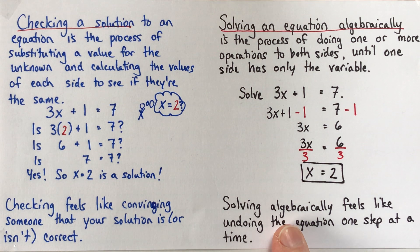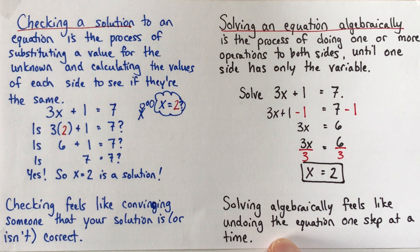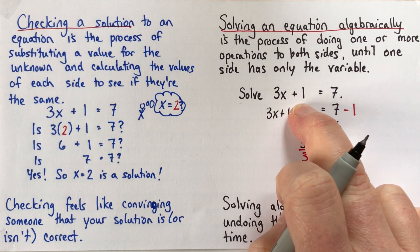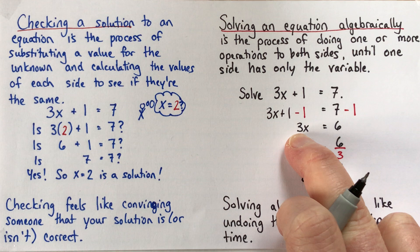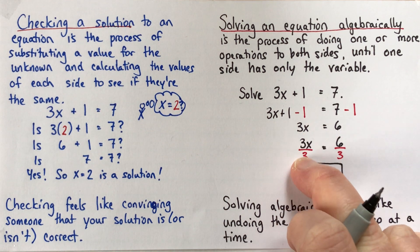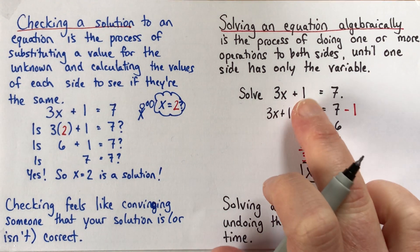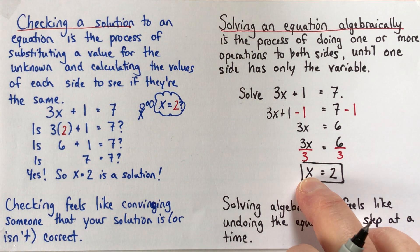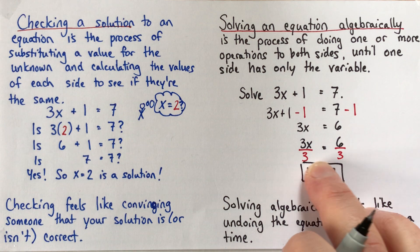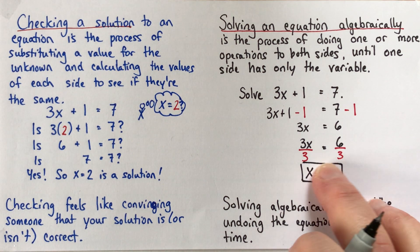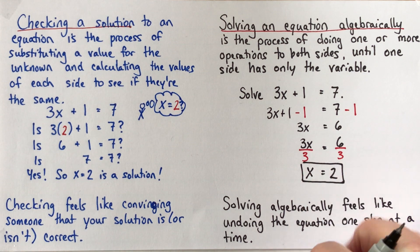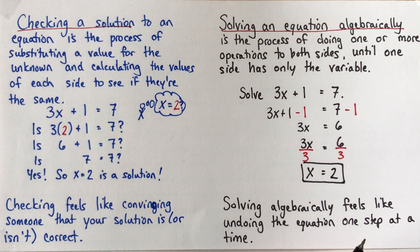So this is an algebraic solution. So solving algebraically, to me at least, it feels like you're undoing the equation one step at a time. So each time, we have 3x plus 1. And then two lines later, we just have 3x. And then two lines later, we just have x. So we're sort of just slowly, slowly peeling back all the layers until we get our equation down to just a really simple equation here that just has the x on one side.